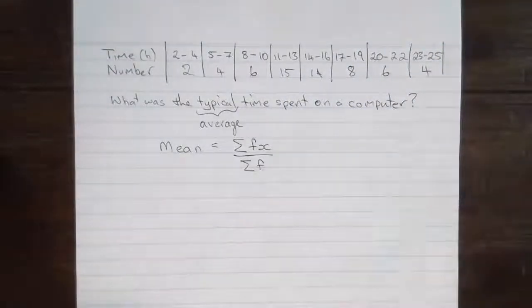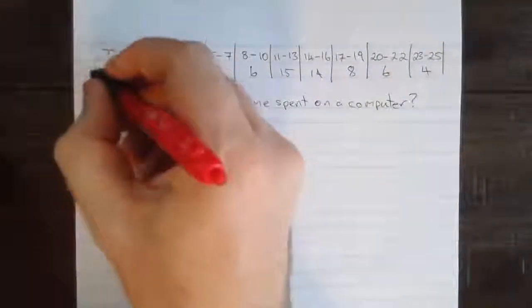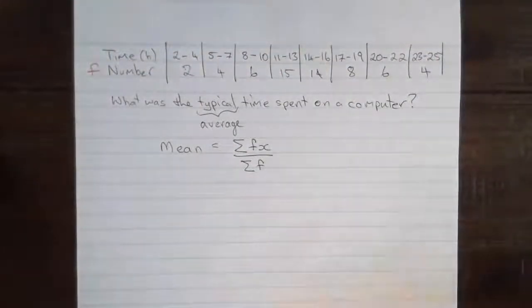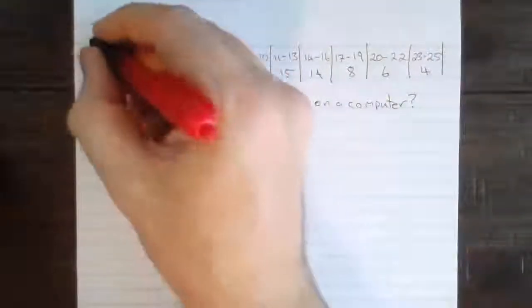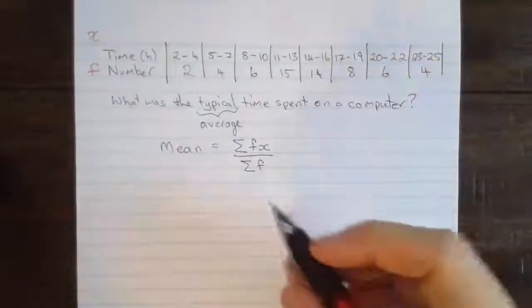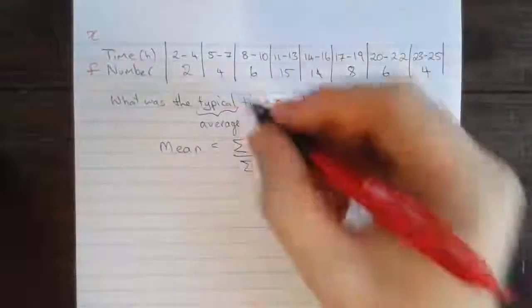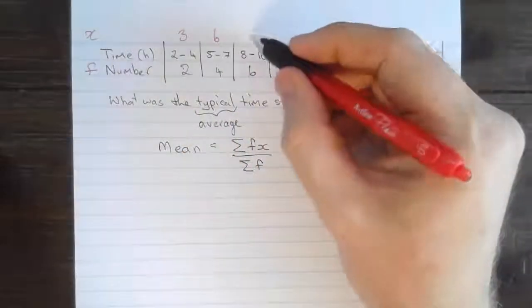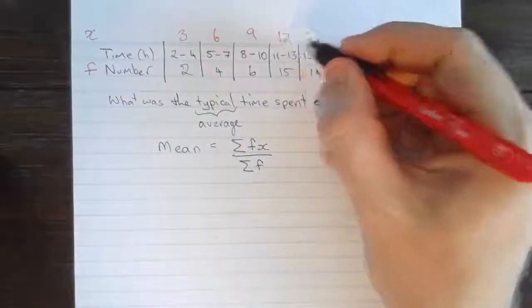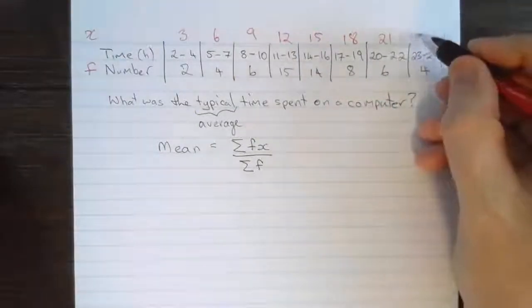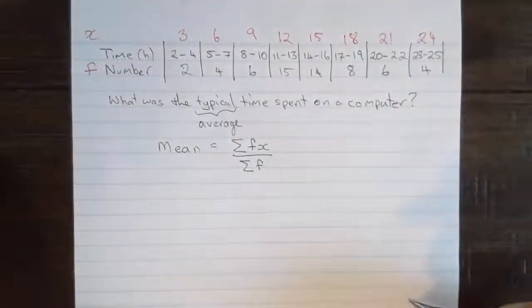So looking up the top, we can note that our F's or frequencies are given in the number row. The midpoints, or the X values, we need to figure those out. So I'm going to add a new row to my table with an X. The midpoints of 2 to 4 is of course 3, 5 to 7 is 6, 8 to 10 is 9, and so on down the line. So we have our X's and our F's, and we can apply the mean formula now.